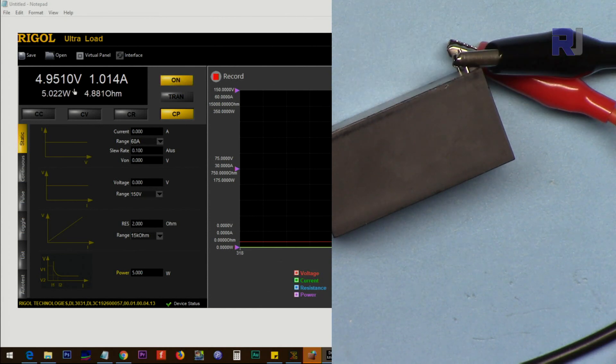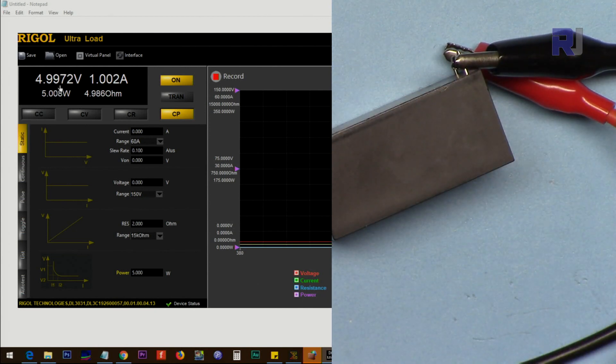1 ampere is being drawn from this and the voltage is 5 volts. Here is the power, and in terms of resistance based on this, we are drawing 5 watts from this.